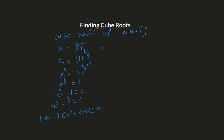So we have two factors: X minus one equals zero, and X squared plus X plus one equals zero. From the first factor we get X equals one — this is the first root. We need to find the other two roots from the quadratic equation.